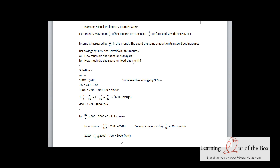How much did she spend on transport? How much did she spend on food this month? Since her savings increased by 30% and is $780, 130% equals $780, so 100% of the savings is $600.